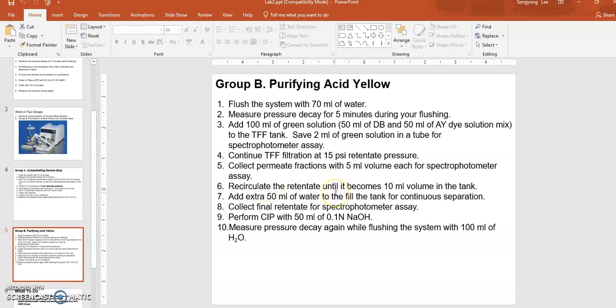Recirculate the green mixture back to the tank until only 10 ml remains. You can extend purification by adding 50 ml of water. At the end, drain and collect everything (retentate), then do CIP and pressure decay check again.